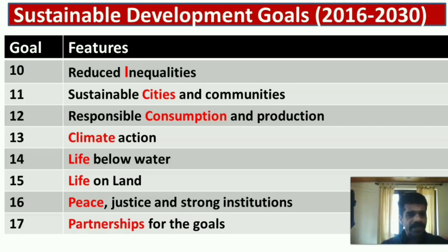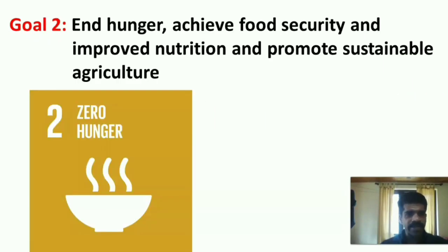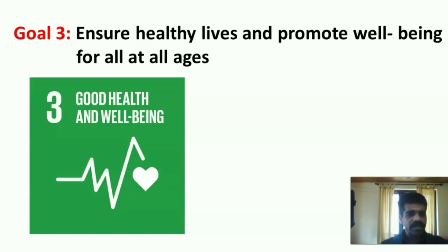Let us explain in detail the 17 goals. Goal 1: End poverty in all its forms everywhere — in short, No Poverty. Poverty is defined as income less than 1.25 US dollars per day. This goal aims to eradicate extreme poverty by 2030. Goal 2: End hunger, achieve food security and improved nutrition, and promote sustainable agriculture — Zero Hunger. Goal 3: Ensure healthy lives and promote well-being for all at all ages — Good Health and Well-being.